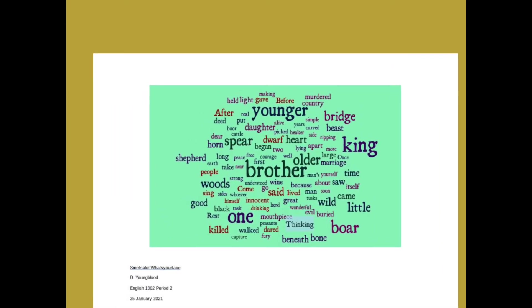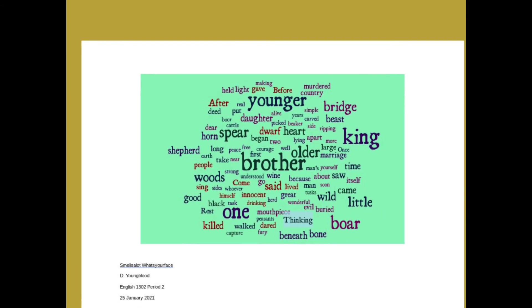This is one I've done for the story. It's pretty simple looking, but you can see certain words start to jump out — words that might give you a clue about symbols and archetypes that might be at work. Things like spears, brothers, woods, older, kings, bridges, beasts, a dwarf, a heart, a shepherd, a boar — these are all things that might have symbolic significance. We're going to identify them by using the word cloud and then by using your own close reading.